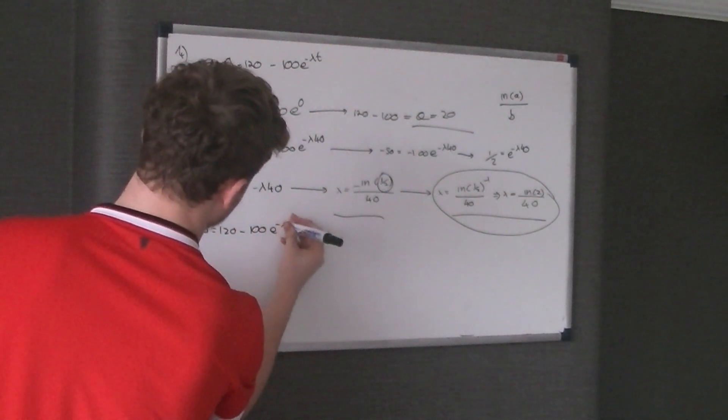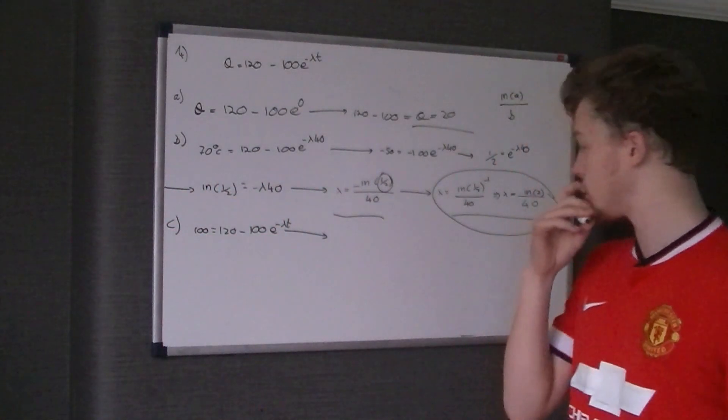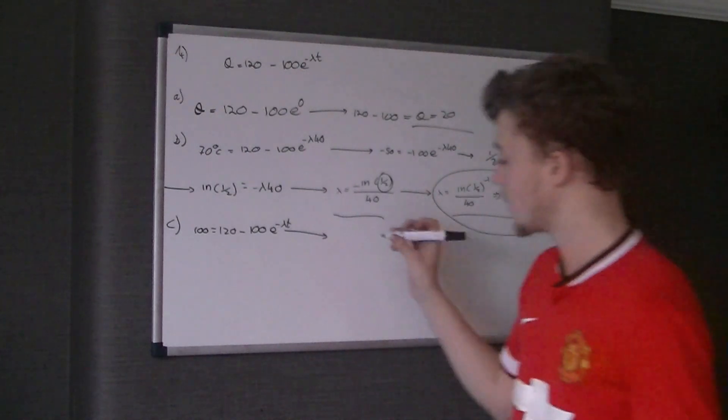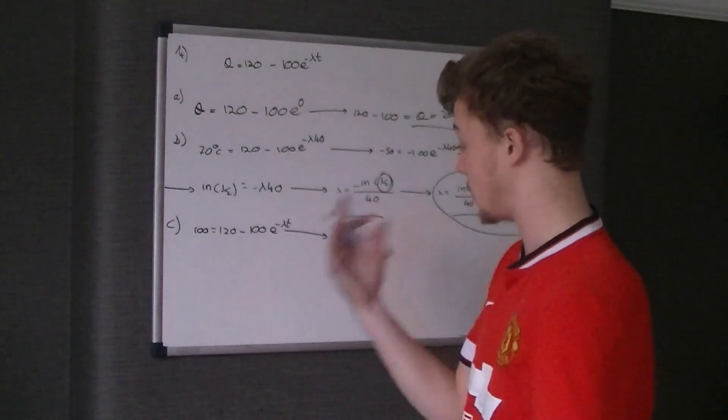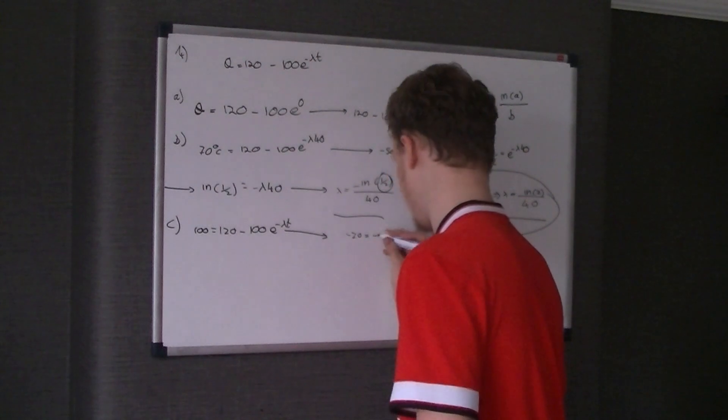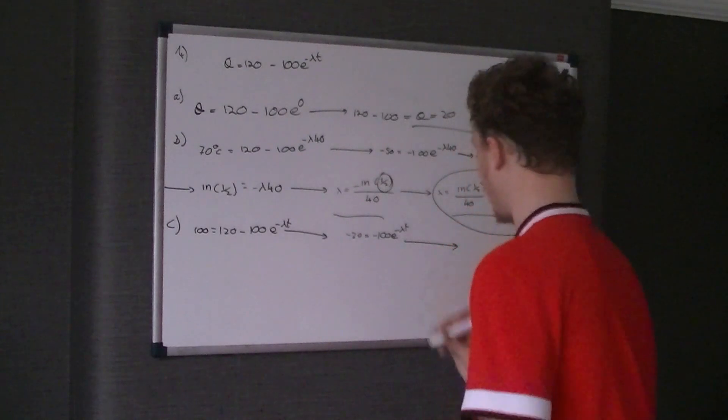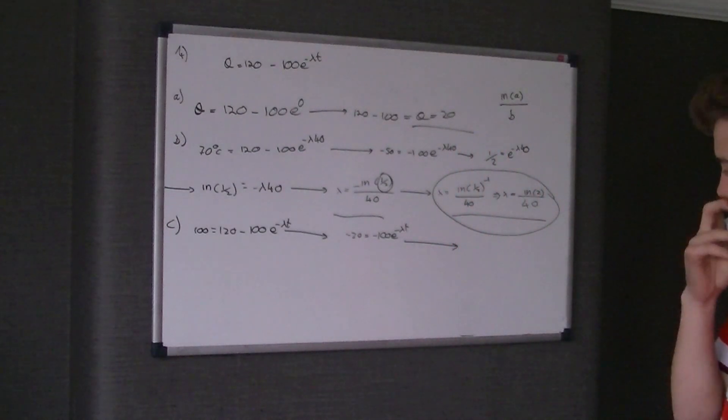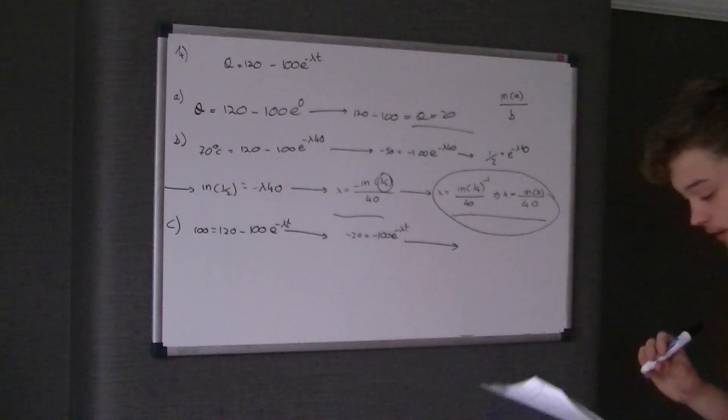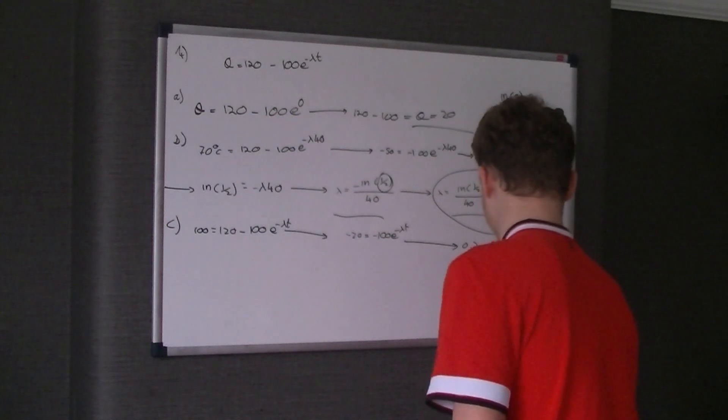So 100 equals 120 take 100 e to the negative lambda t. Now you can substitute that in with putting what lambda is straight away, that's totally up to you. But it's a little bit messy. So I just keep it as lambda until you get to the end bit and then you can sub it in. So obviously this is going to be negative 20 equals negative 100 times e to the negative lambda t. Divide both sides by negative 100 and that gets you a fifth or 0.2 equals e to the negative lambda t.